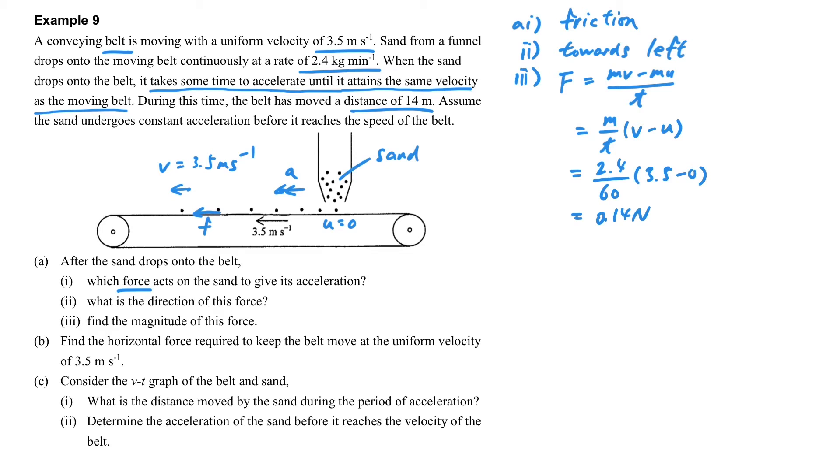Now let's go to part B. What is the horizontal force to keep the belt moving? What does it mean? Because there is a friction acting on the sand, at the same time, this friction is also acting on the belt in the opposite direction.